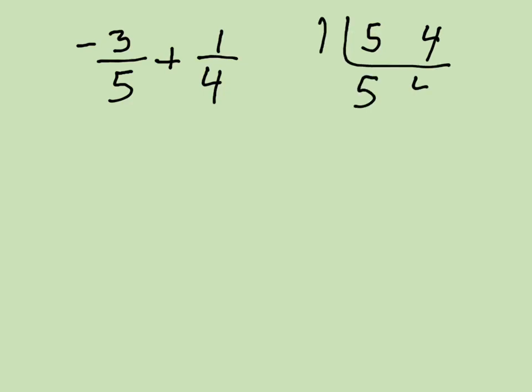How about negative 3 fifths, and we're going to add to that, oh, I don't know, 1 fourth. So we look at those. We're going to make our L chart, 5 and 4. Oh, this is one of those special cases where only one goes in. That's kind of nice. We like those because those are really simple.